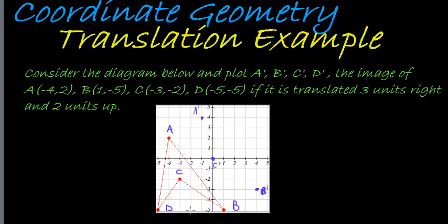And then for D, 1, 2, 3 to the right, two units up. D would be there, that is D'.